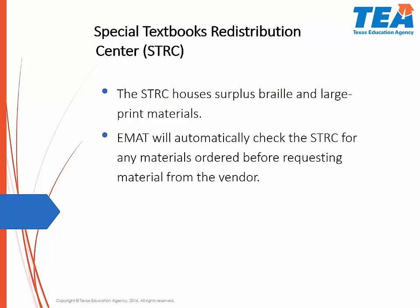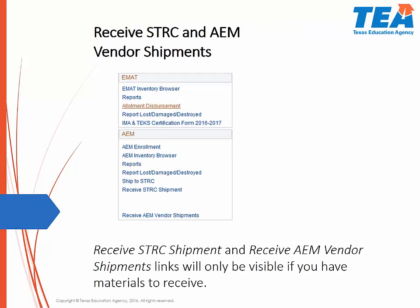The Special Textbooks Redistribution Center, or STRC, is a center whose purpose is to house extra materials in braille and large print. Districts may then utilize those surplus materials and students will be provided the textbooks in a timely manner. After a requisition is generated in EMAT, it automatically checks the STRC for any surplus materials. If the materials are there, they are usually shipped out that day or the next. If not, you will receive an email stating that the district AEM order assigned to the STRC has been rejected, which simply means that the STRC did not have the ordered material and the system will then request the material from the proper vendor. Please check the Receive STRC Shipments and Receive AEM Vendor Shipment links on the District Start page periodically to make sure that you have received all ordered materials into your inventory.